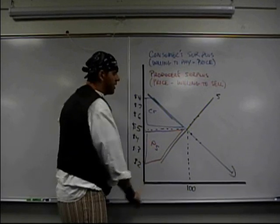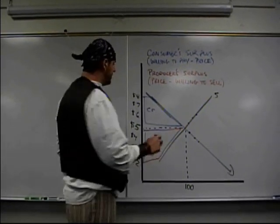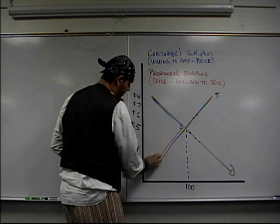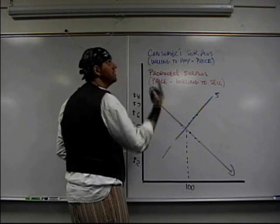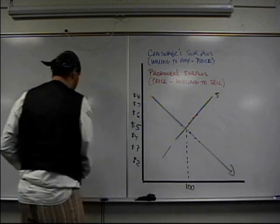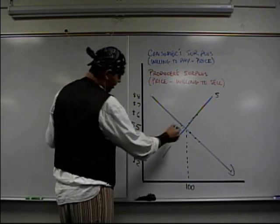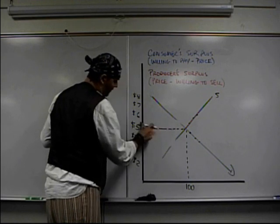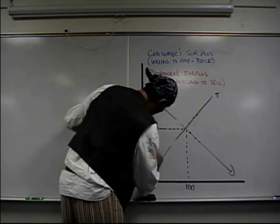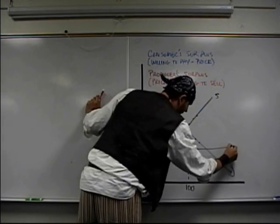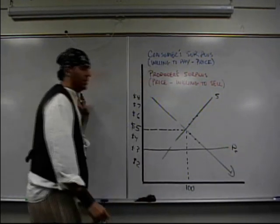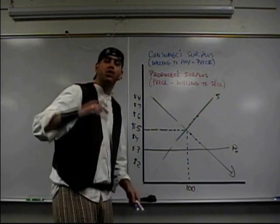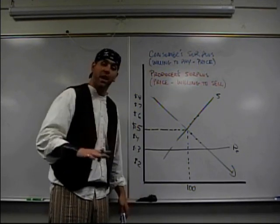What I'm going to do right now is put in a price ceiling. The price ceiling is going to affect consumer and producer surplus. A price ceiling is a ceiling — it prevents the price from going up to equilibrium. We'll say equilibrium was $5 and the government comes in and says we're going to set a price ceiling at $3. The government says the price can't go above $3.